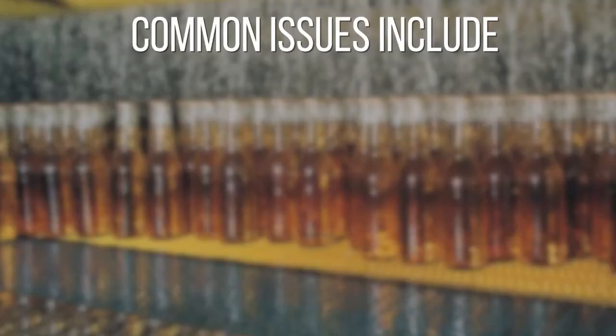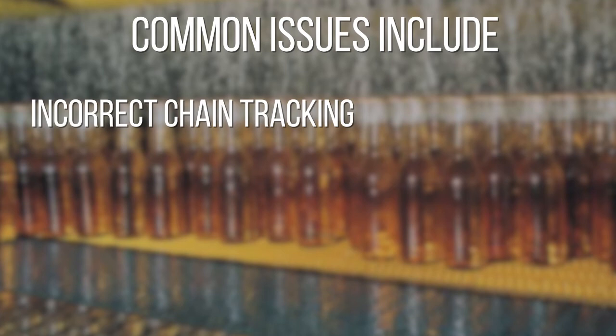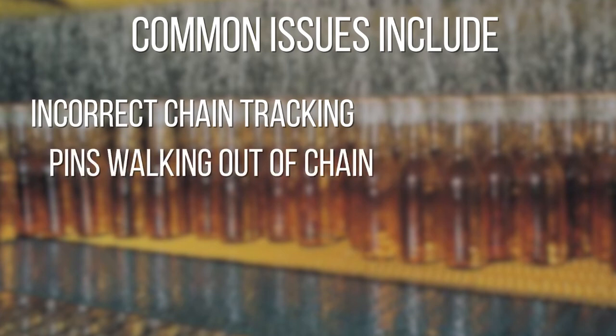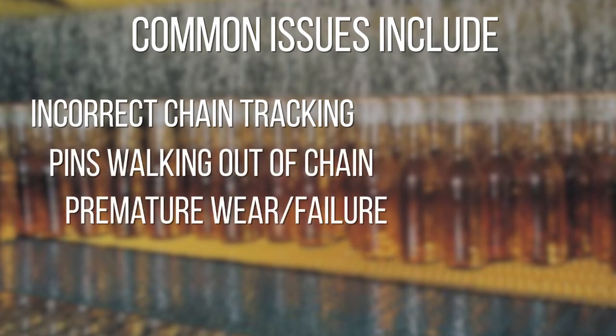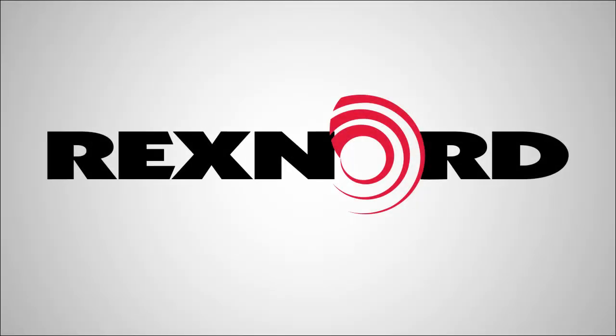Ensuring conveyor squareness in your application can remedy some common issues, such as chain tracking issues, pins walking out of the chain, and premature wear or failure of your chain.